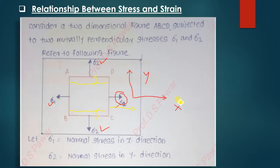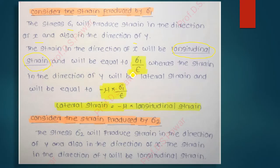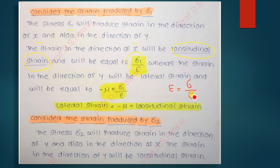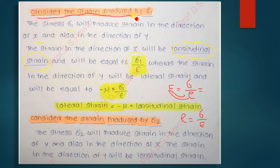The strain along the x direction is the longitudinal strain and is equal to sigma 1 divided by E, because Young's modulus E equals stress divided by strain, so strain equals stress divided by Young's modulus. The strain in the y direction due to sigma 1 is the lateral strain. It is important to understand the difference between longitudinal strain and lateral strain.